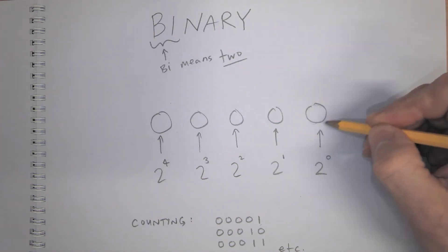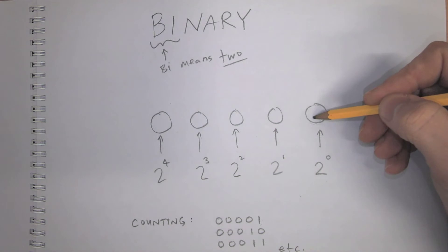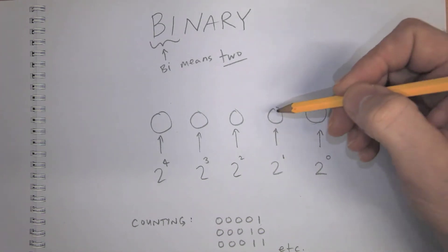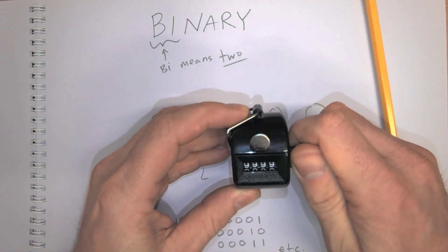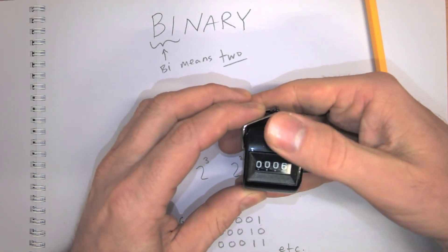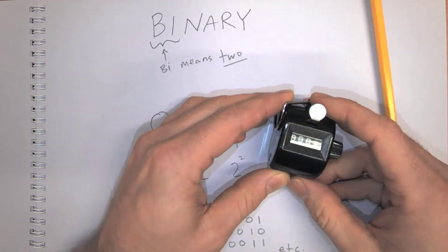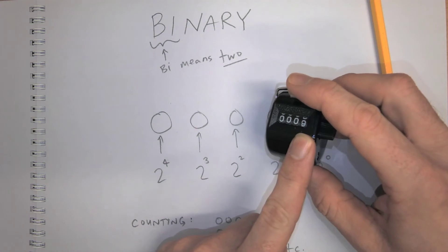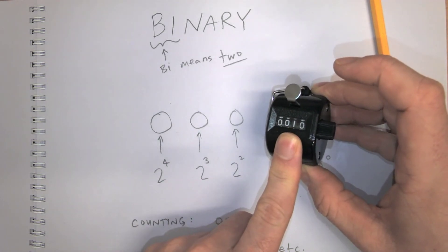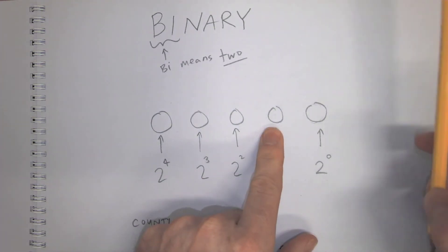So then this number starts at 0, it goes to 1, but then we're out of numbers. Then it resets to 0, and then when this one resets to 0, remember what happens? This one goes to 1. Just like this. So this is a 9. When it resets to 0, it adds 1 to the next column.